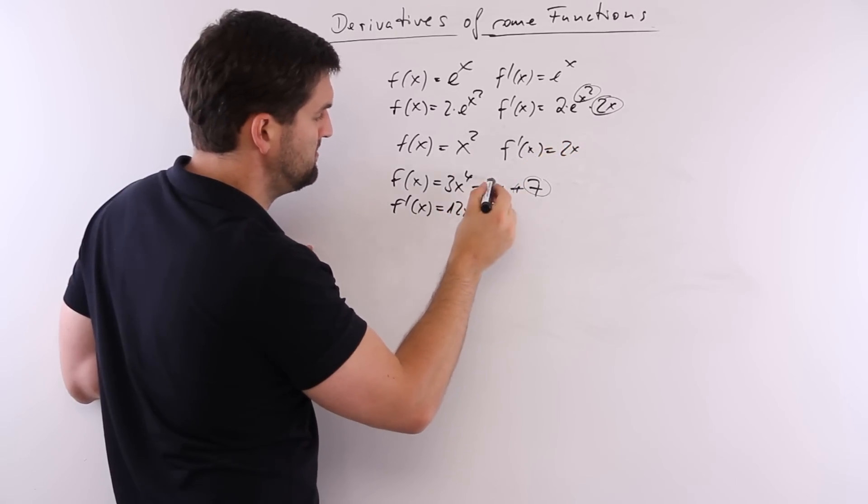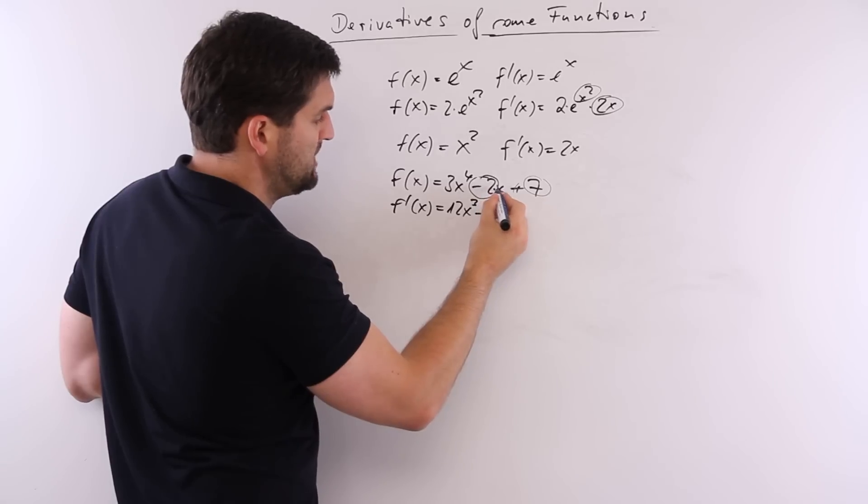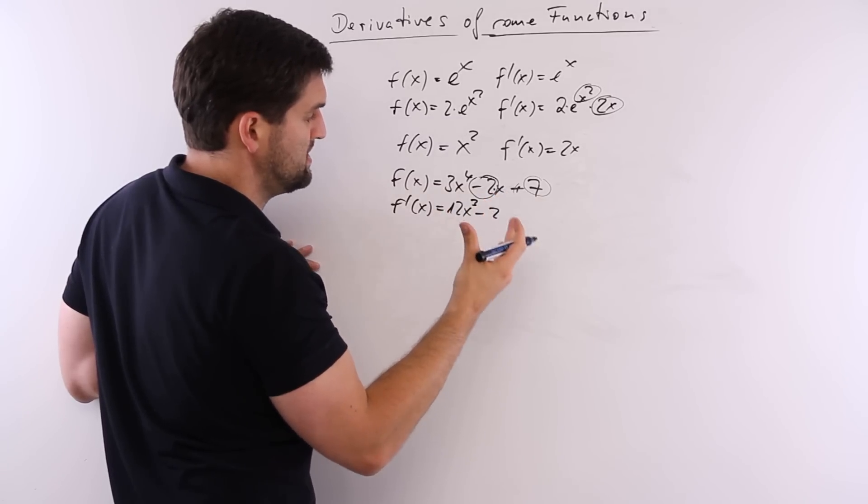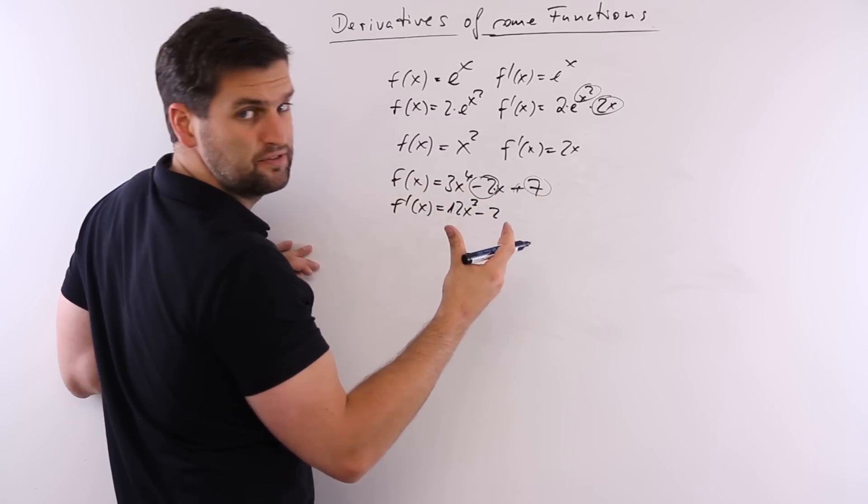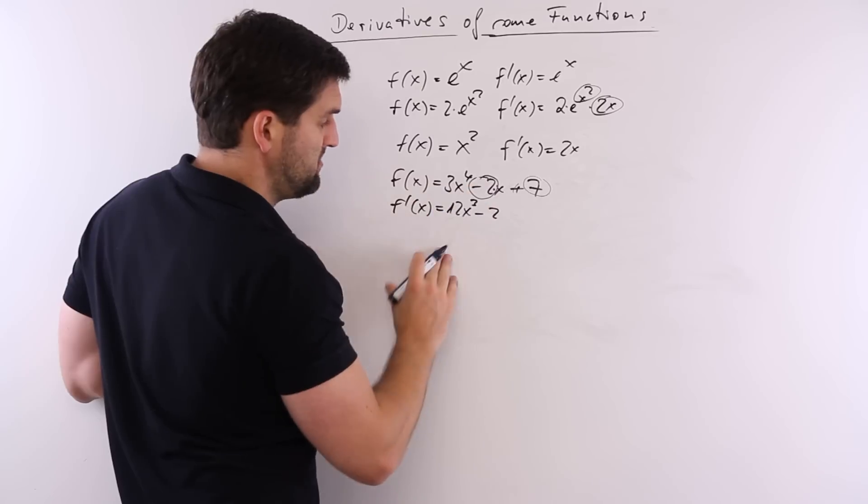If you have a number in a multiplication with x, the only thing you have to write down is the number itself.